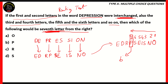Therefore, option B — the letter P — is the right option. O turns out to be the first letter from the right, which is wrong. R is the eighth letter, which is wrong. S comes as the third and sixth letters, so that is also wrong. The right option is option B, the letter P.